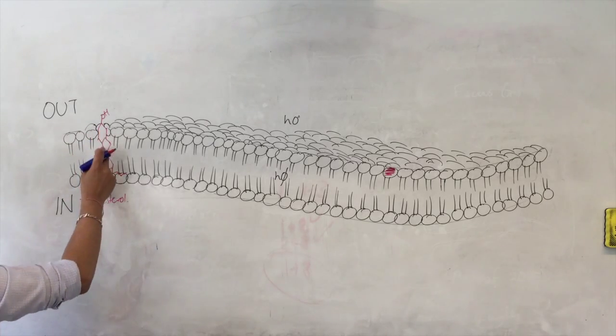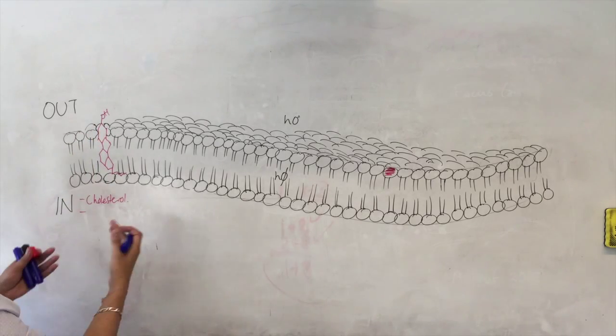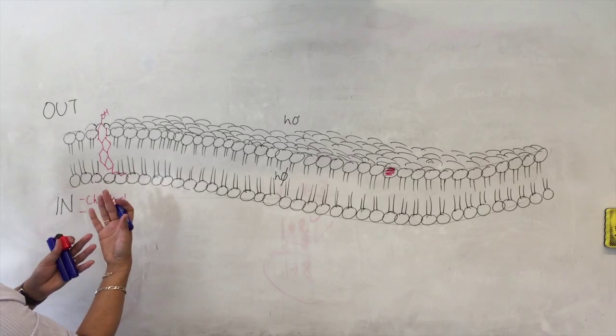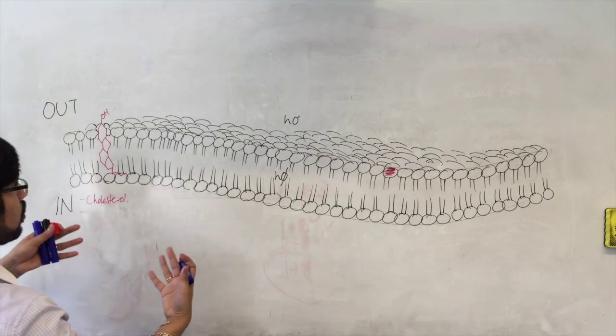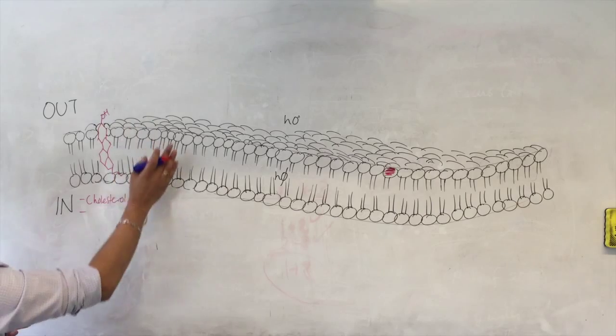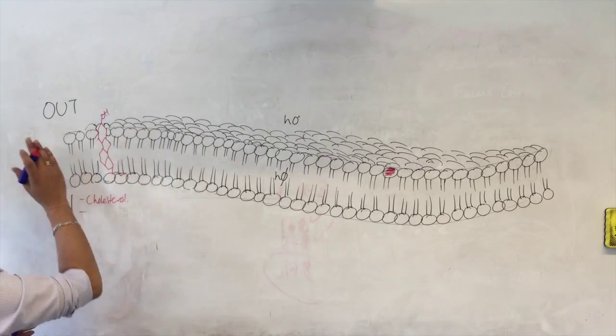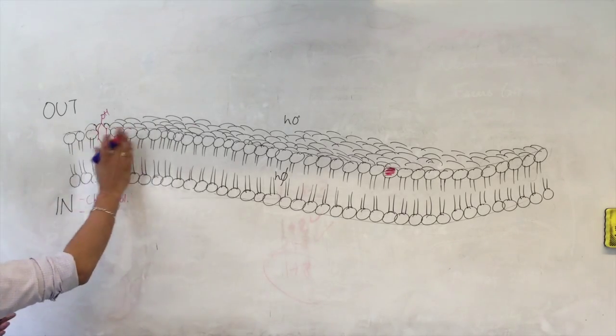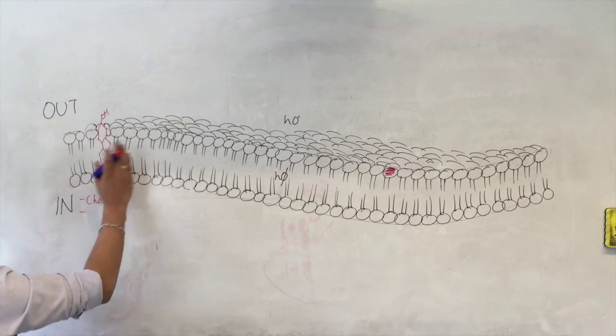It's got this four-carbon ring structure. It's kind of like a flat, planar molecule, and because of that, it kind of disrupts the flow of the lipids, of the phospholipids, in the two dimensions.